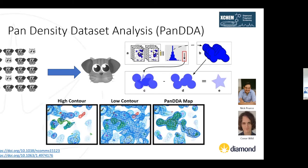For fragment screening, we also have a novel algorithm called PANDDA — pan-density dataset analysis — to determine weak binders. PANDDA makes use of the large number of APO or unliganded crystal structure datasets obtained as part of a fragment screen — typically 500 to 1,000 datasets, of which about 90% won't contain any ligand. We use these to generate an average map of an unliganded model and subtract this from each dataset to see if there's any weak binding, helping identify fragments binding at low occupancy.